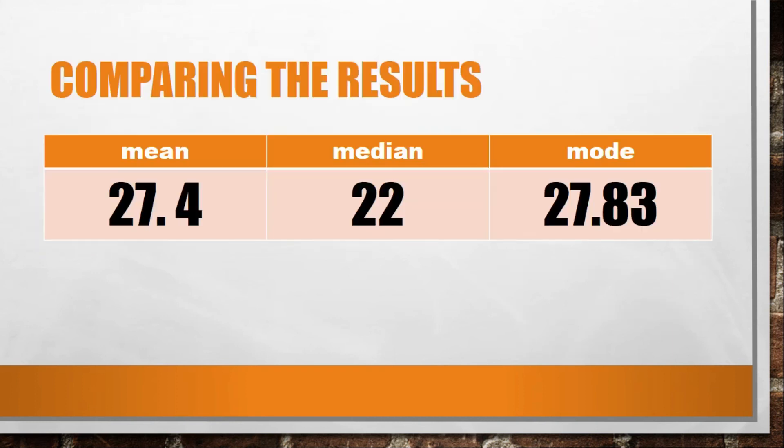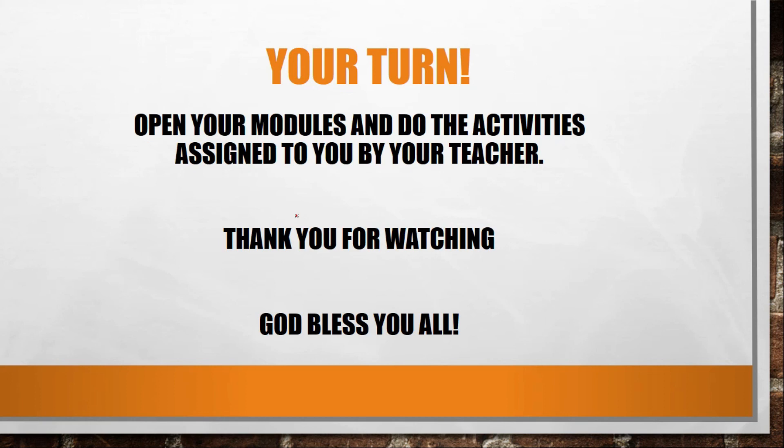Now comparing the results: your mean is 27.4, median equals 22, and the mode is 27.83. As you can see, they're not the same. We discussed last lesson that the most reliable measure of central tendency is the mean, so I rely more on this.